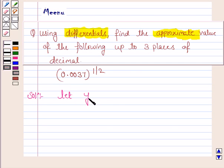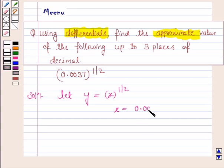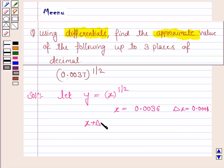Let us first define y as a function of x. So we define y as x to the power 1 by 2. We choose x in such a way so that we can easily find out its square root and that is also near to 0.0037. So we choose x to be 0.0036, and since we need to have x plus delta x as 0.0037, we choose delta x as 0.0001. So x plus delta x is equal to 0.0037.